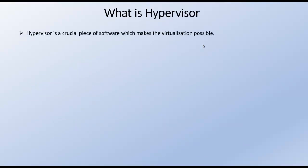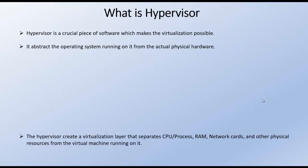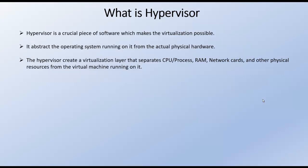Hypervisor is a crucial piece of software which makes virtualization possible. As I said earlier, hypervisor is the backbone of this virtualization technology. The functionality of the hypervisor is to abstract the operating system on which it is running from its physical hardware. The hypervisor also creates a virtualization layer that separates the CPU, processes, RAM, network cards, and other physical resources from the virtual machines running on it. I will try to explain this particular point in detail in my next slide.